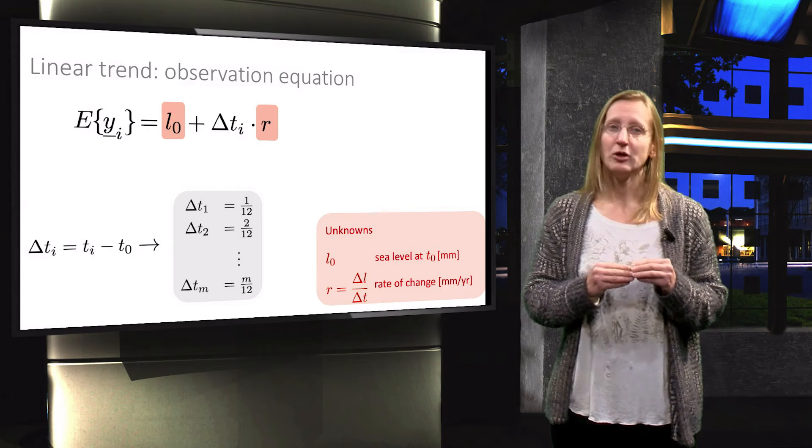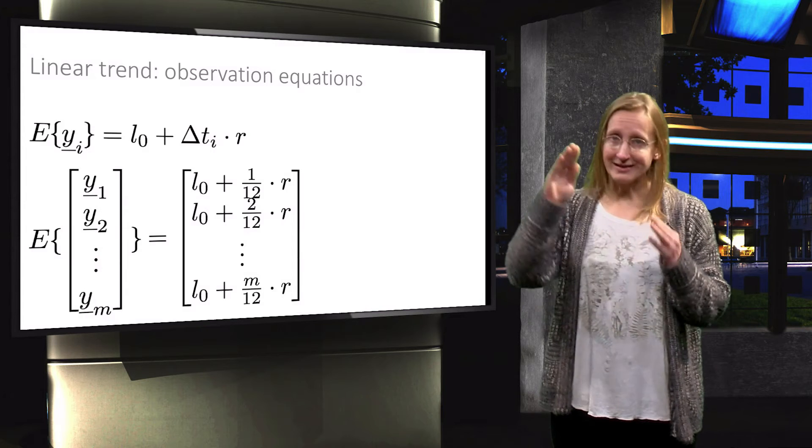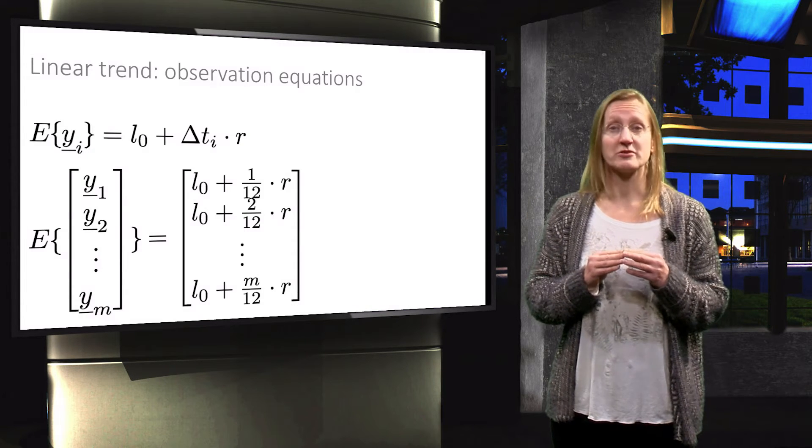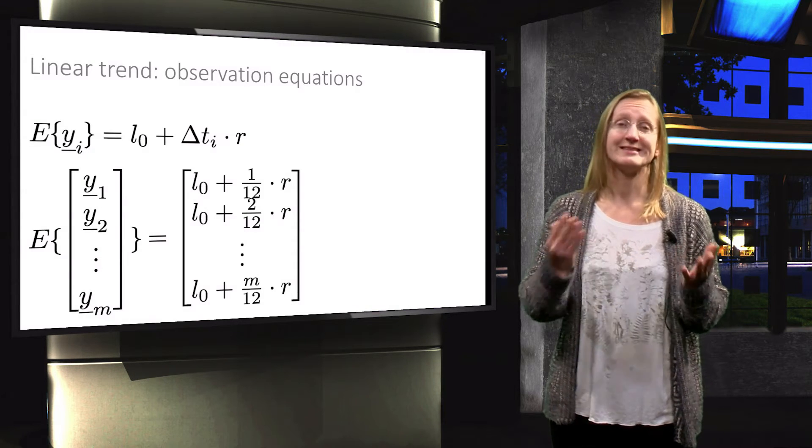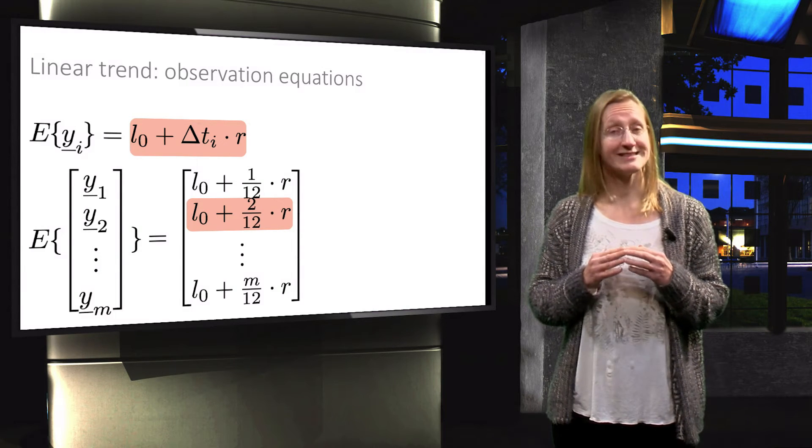The system of M observation equations becomes as follows, where on each row we recognize the observation equations for the time Ti. For instance, here we highlighted the equation for the second observation.